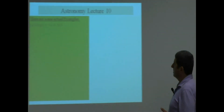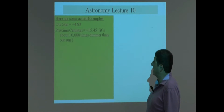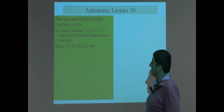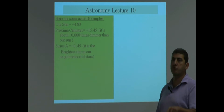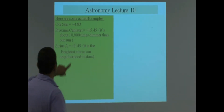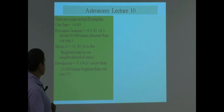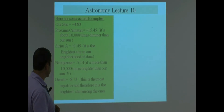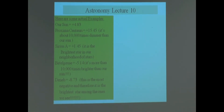Some actual examples: the Sun gets 4.83 on absolute magnitude. Proxima Centauri is 15.45 — about 10,000 times dimmer than our Sun. Sirius A gets a positive 1.45 absolute — it is the brightest star in our neighborhood. Betelgeuse is negative 5.14 — more than 10,000 times brighter than the Sun. And Deneb is negative 8.73, the most negative and therefore the brightest star among the ones we observe.